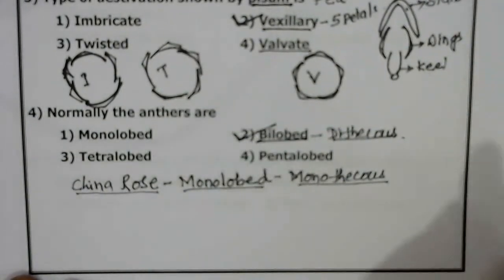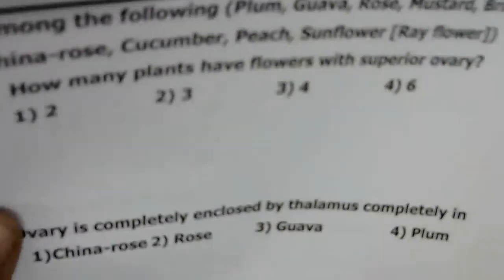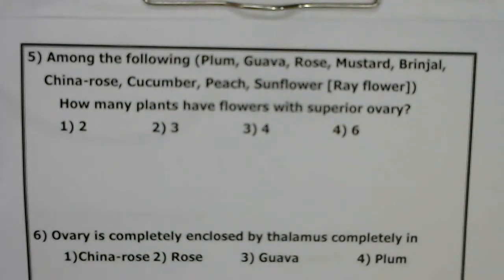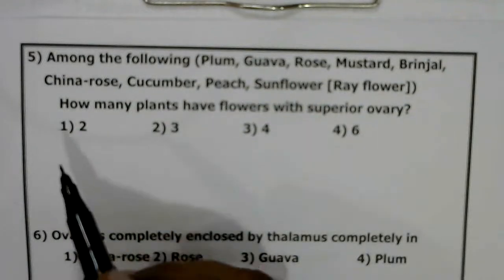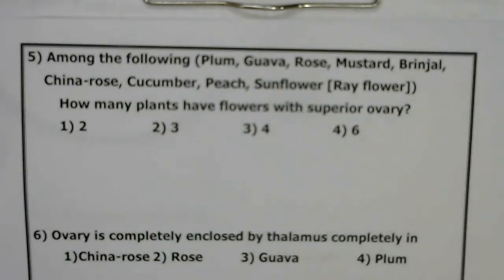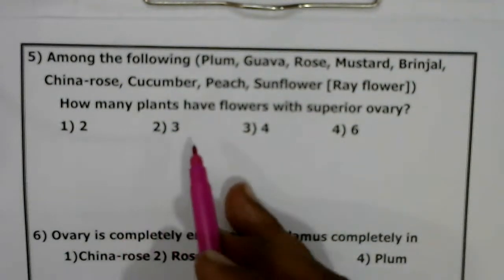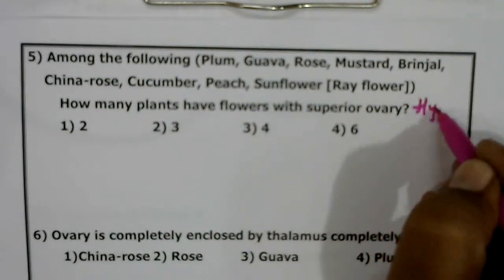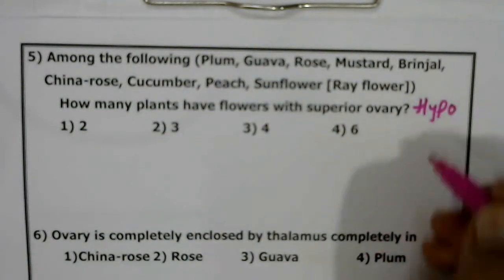That is the correct answer. The next question: among the following plants — plum, gourd, rose, mustard, brinjal, China rose, cucumber, peach, sunflower — how many have flowers with a superior ovary? That is the hypogynous ovary. Hypogynous ovary is present in mustard, brinjal, and China rose — these show hypogynous, which is called a superior ovary.